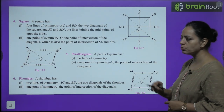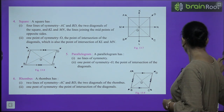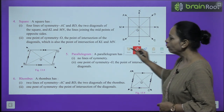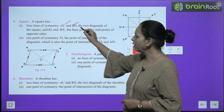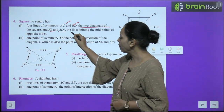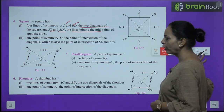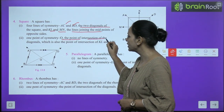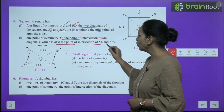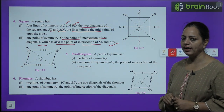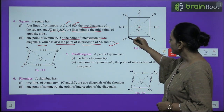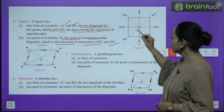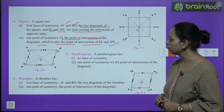A square has four lines of symmetry: KL, MN, and the two diagonals AC and BD. These are the lines joining the midpoints of opposite sides plus the two diagonals. There is one point of symmetry — the point of intersection of the diagonals, which is also the intersection of KL and MN. All four lines pass through this point, so it is the point of symmetry.